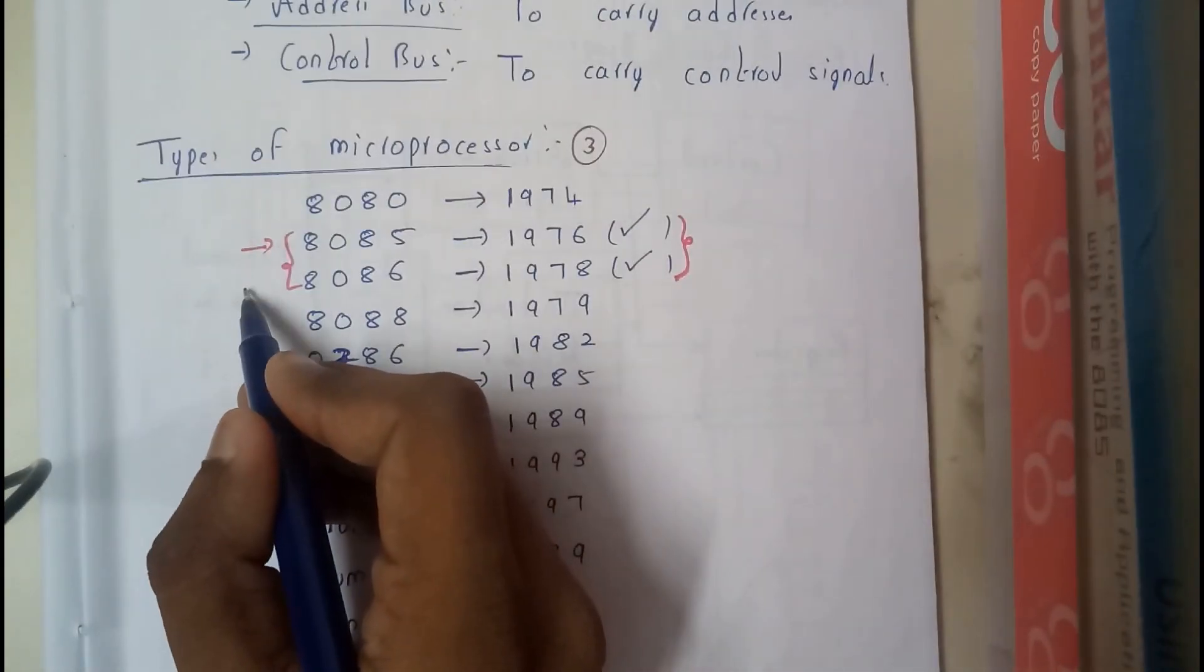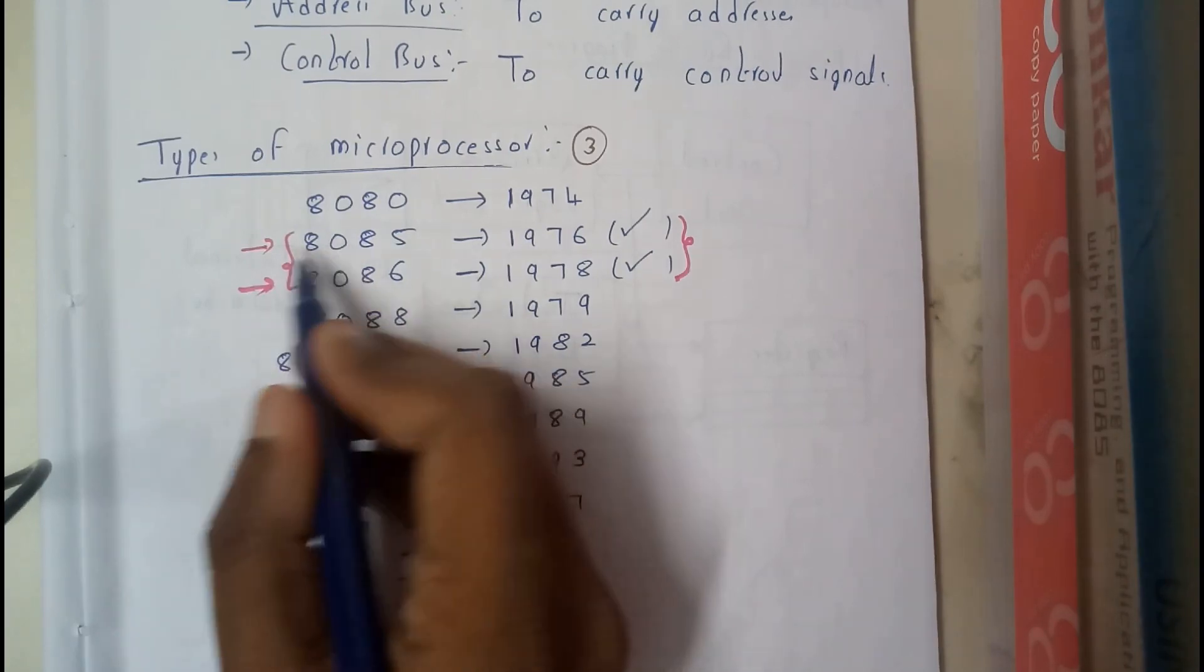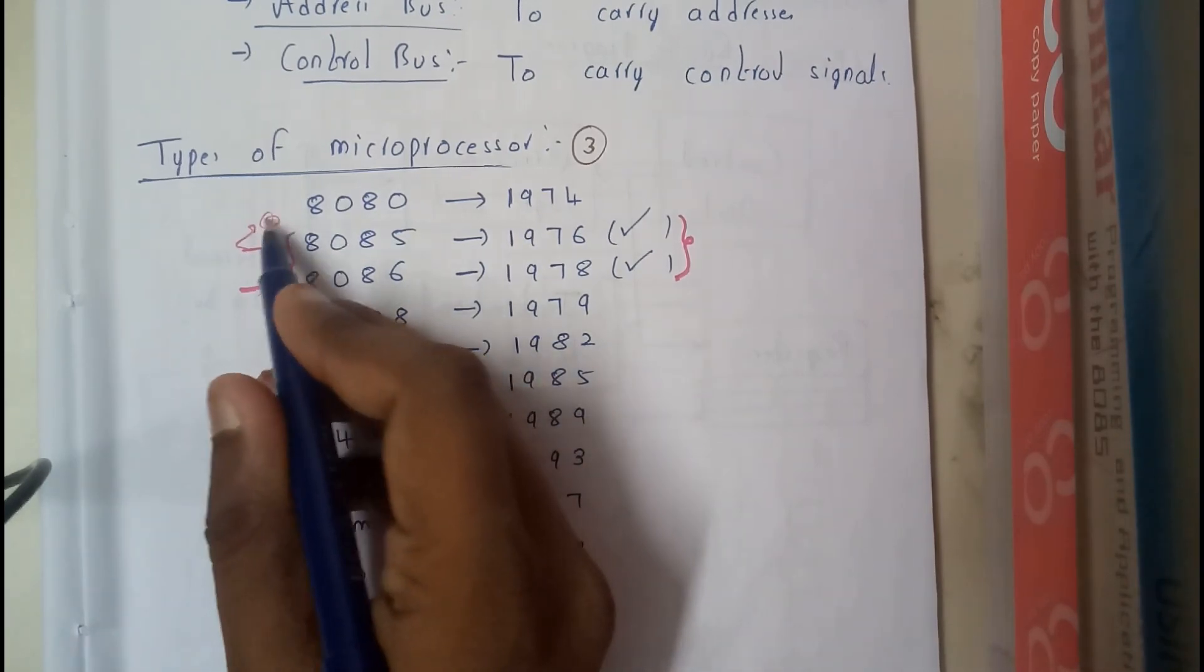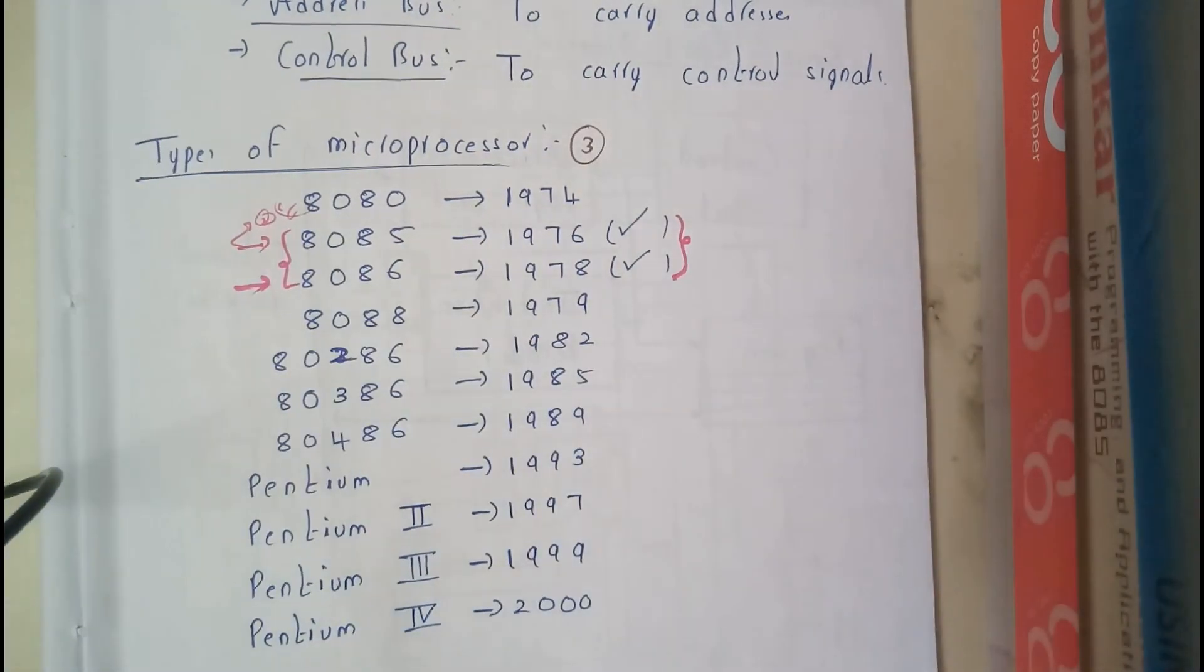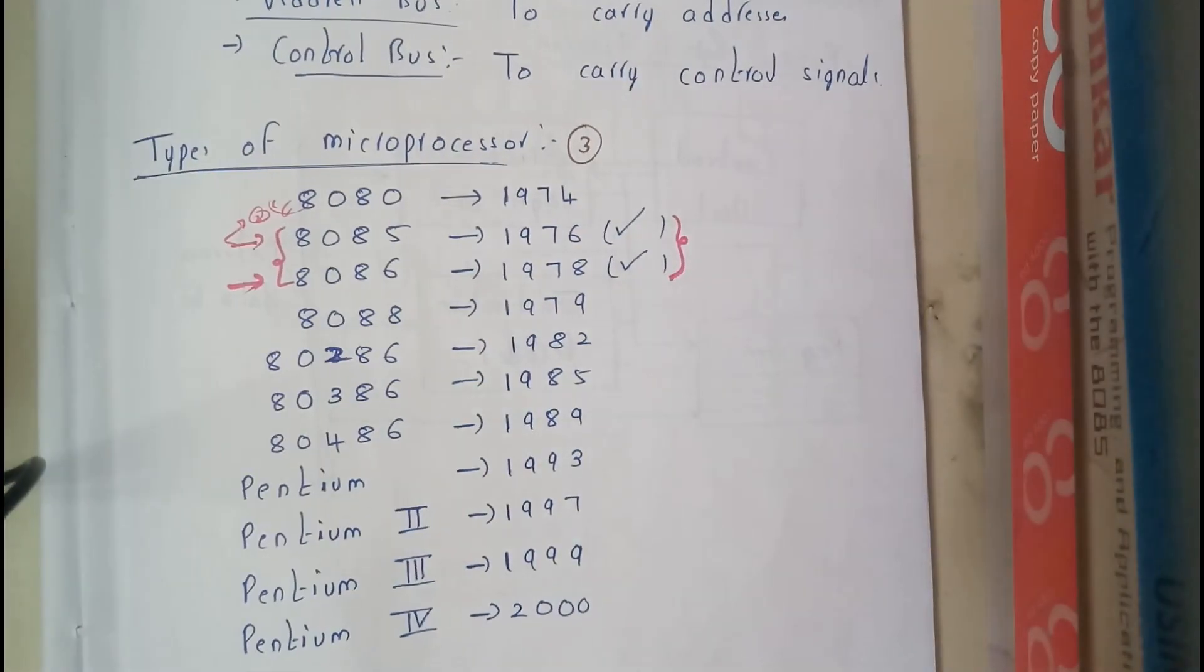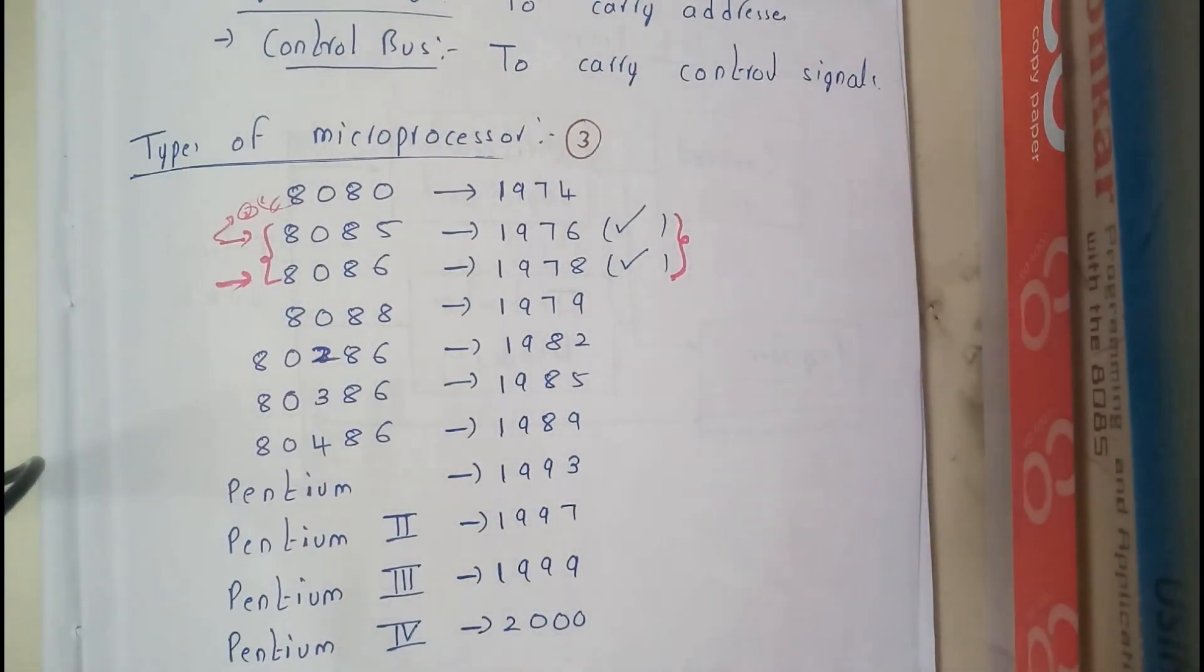And chapter 4 and 5 consists of 8086. So 8085 is also covered in second chapter up to half. Half of the second chapter also consists of 8085 only. I hope everyone is now clear with the types of different microprocessors.